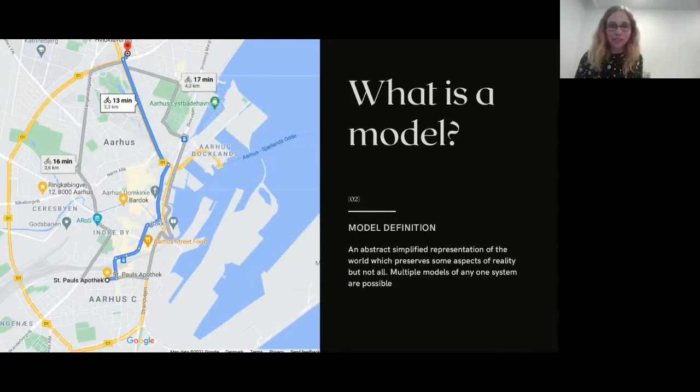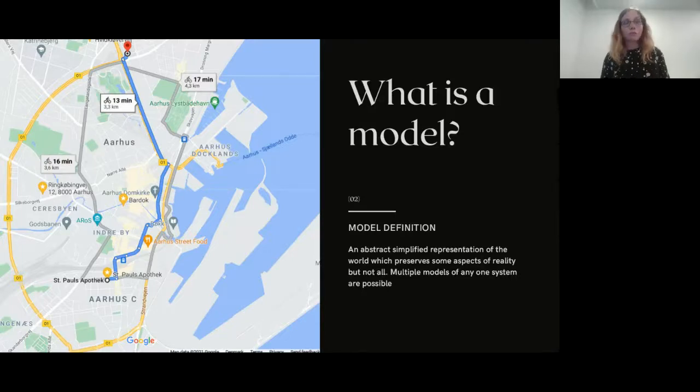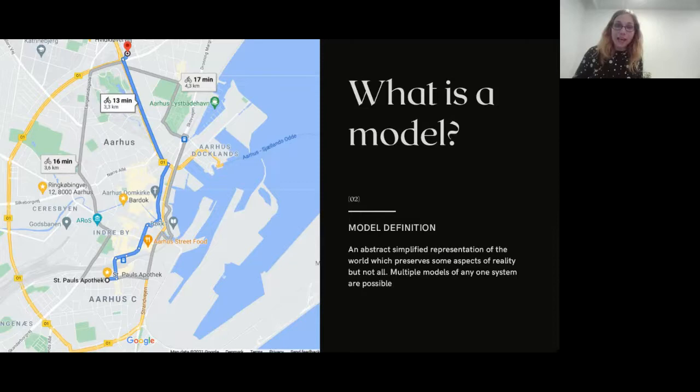Both of those models are accurate and correct. It's not that they're not showing the reality. But there's other models of the city of Aarhus. This is, for example, a map of the geology of the city. I can tell you it's definitely a very precise and realistic and accurate representation of the city, which is at the same time absolutely and utterly useless for the purpose of getting to the restaurant. From that, let's construct the definition. A model is an abstract, simplified representation of the world, one aspect of it usually, and it preserves some aspects of reality but doesn't preserve all of them. From that follows pretty logically that multiple models of any system are possible, and all of them may be appropriate and accurate and correct. But it doesn't mean they're all equally useful.